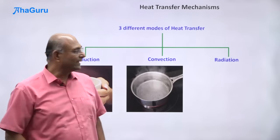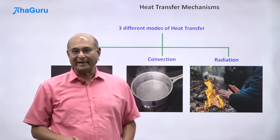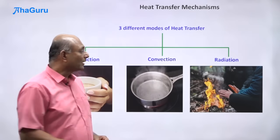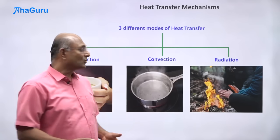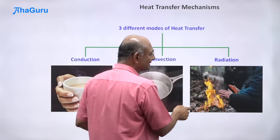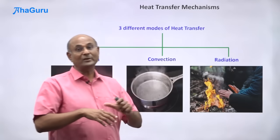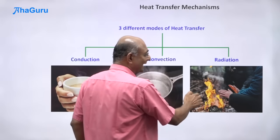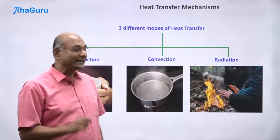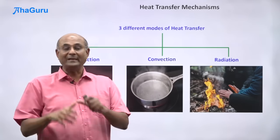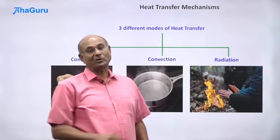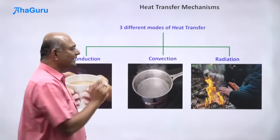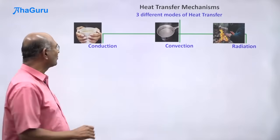On a cold day, if you sit before a fire, you are not touching that fire — you are at some distance — but your hands feel warm. How is heat getting transferred to your hands? Because the fire is actually emitting electromagnetic waves. These electromagnetic waves carry energy to your hands and that's how your hands feel that warmth. This process is called radiation.